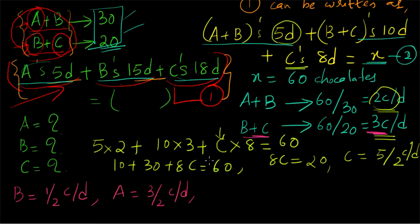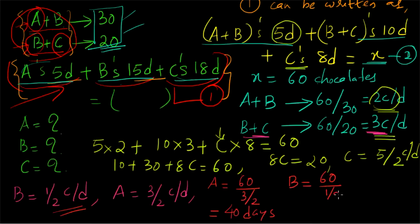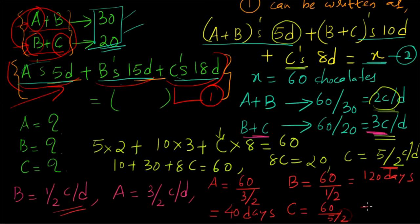Now we find the final answers. The total work is 60 chocolates. A consumes 3/2 chocolates per day, so A alone takes 60 ÷ (3/2) = 40 days. B consumes 1/2 chocolate per day, so B alone takes 60 ÷ (1/2) = 120 days. C consumes 5/2 chocolates per day, so C alone takes 60 ÷ (5/2) = 24 days. Thank you for watching.